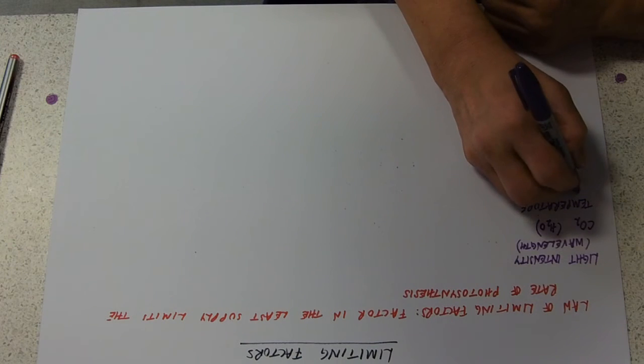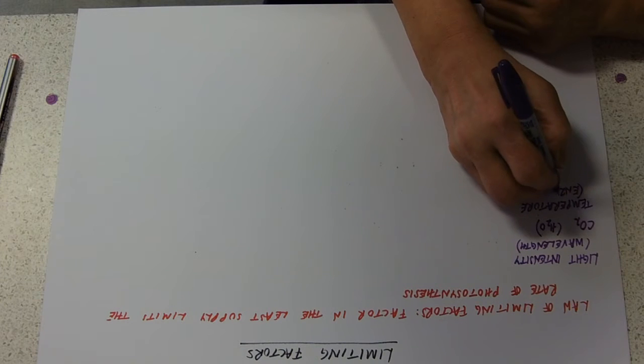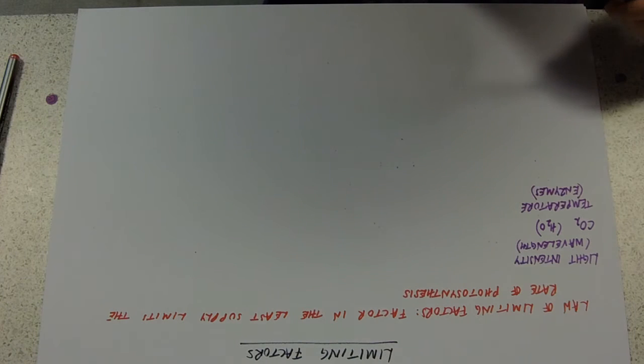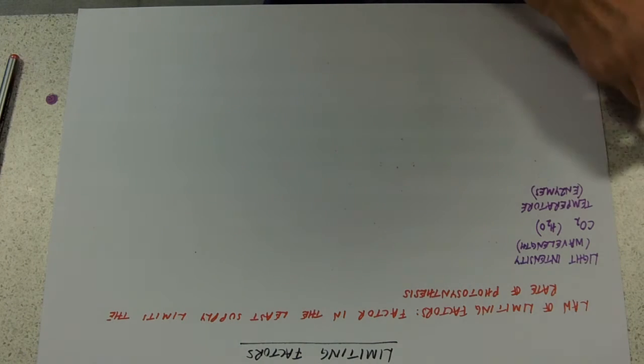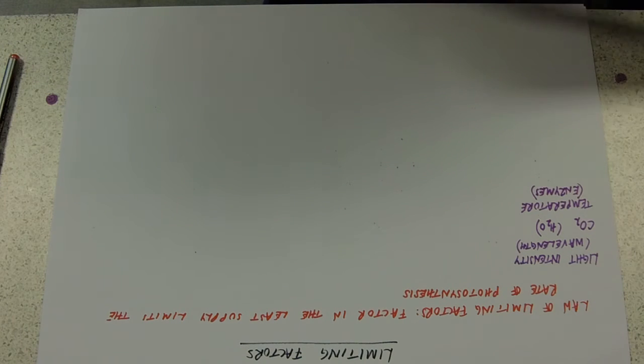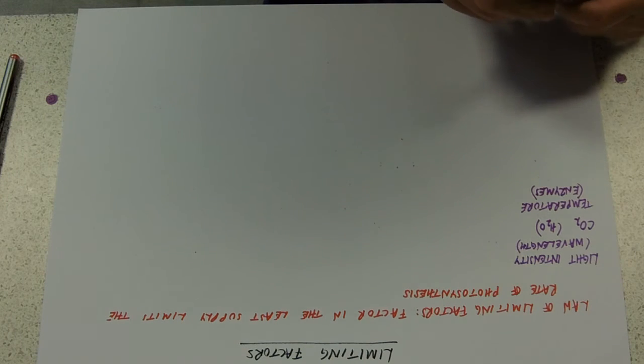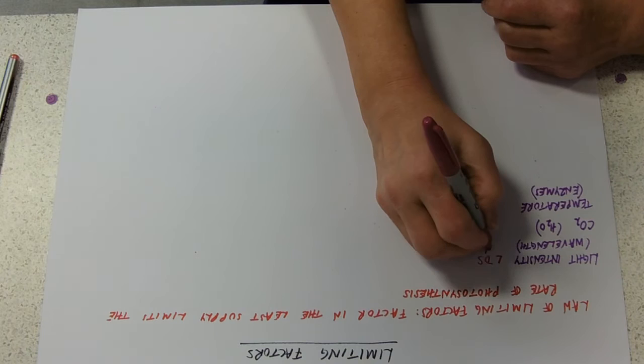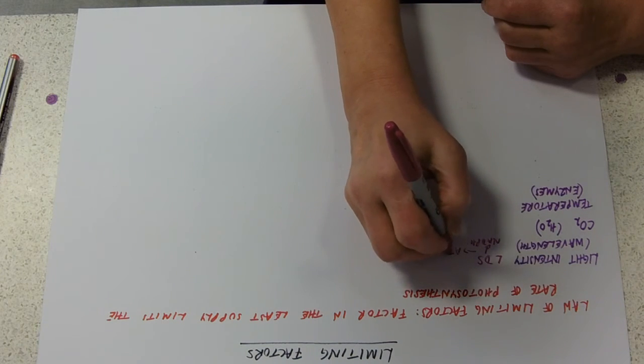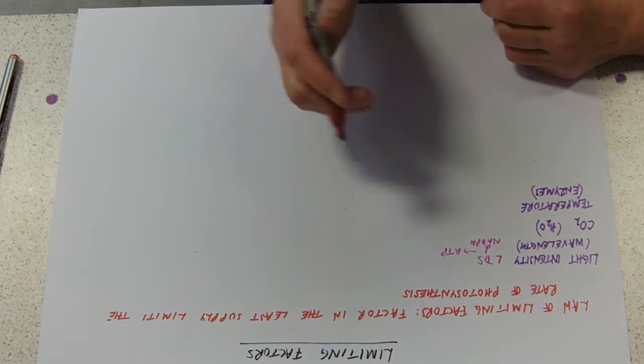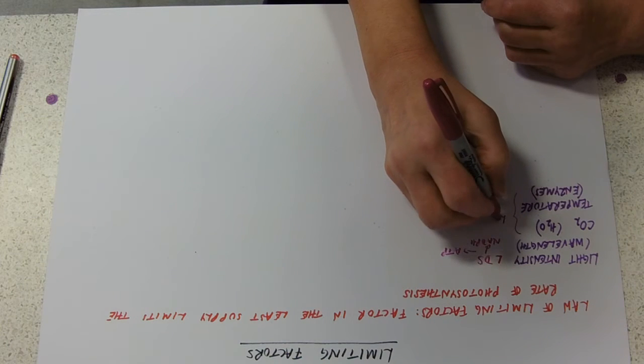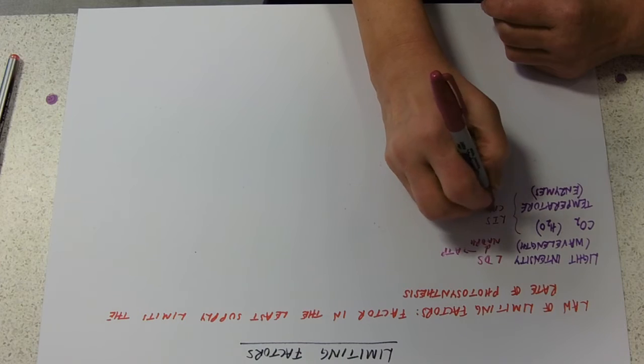Temperature affects enzymes. Effectively, light intensity is going to limit how fast the light dependent stages will go - I'm just going to abbreviate that to LDS. They're producing NADPH and ATP, which will determine how fast the Calvin cycle can go. And these two affect the light independent stage, or Calvin cycle.